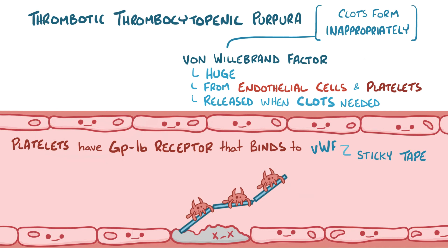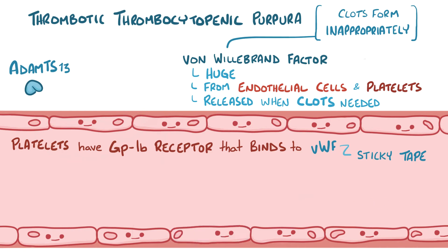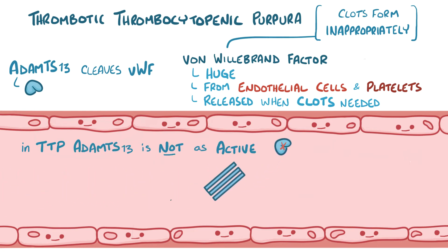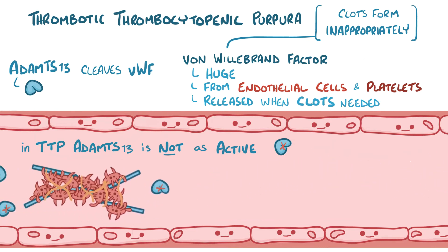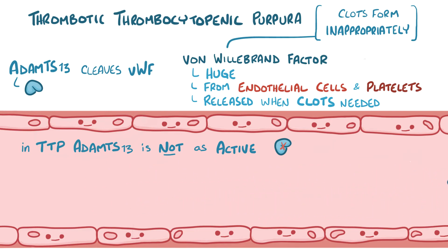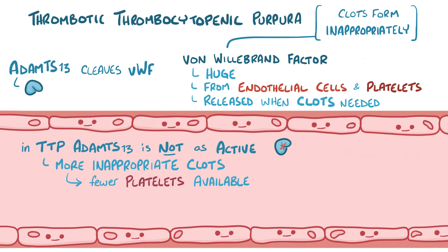Under normal conditions, once time has passed and the clot has served its role, the von Willebrand factor protein gets chopped into small pieces by an enzyme that floats around in the blood called ADAMTS13. In thrombotic thrombocytopenic purpura, the ADAMTS13 enzyme is not as active, which means there's excess von Willebrand factor floating around in the blood. That von Willebrand factor starts binding to platelets and forming clots all throughout the body, including the kidneys. This inappropriate clot formation also means that there are fewer platelets available when clots are actually needed.